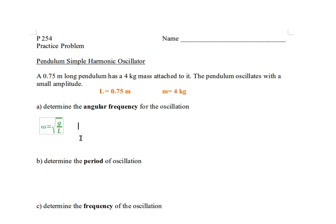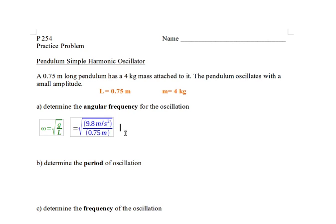But we know these values, so we can go ahead and plug them in. I'm going to use 9.8 for my gravity, and my length is my 0.75 meters. When I do this calculation, I get a value of 3.61 radians per second.